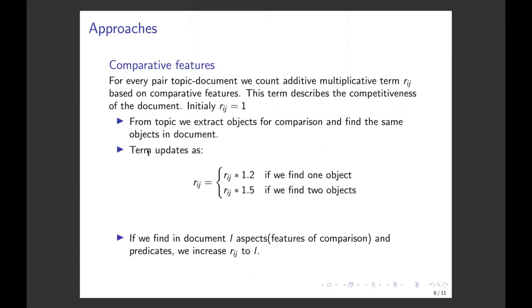The next set of approaches is based on comparative structure. For every pair, topic and document, we count an additive multiplicative term rij, which should describe the comparativeness of that document according to the topic. Initially, this term is one. Then from the topic, we extract objects for comparison and find the same objects in documents. We extract comparative objects by a BERT-based model pre-trained on a special comparative dataset.